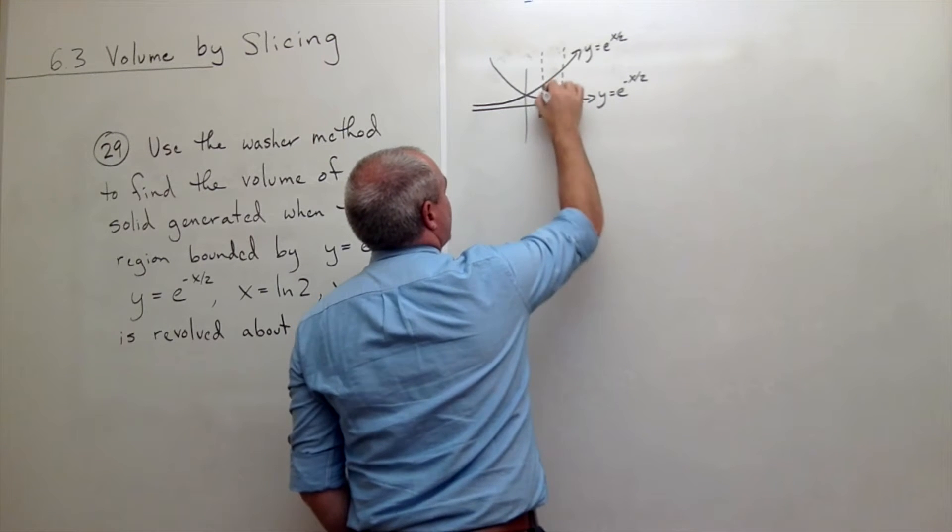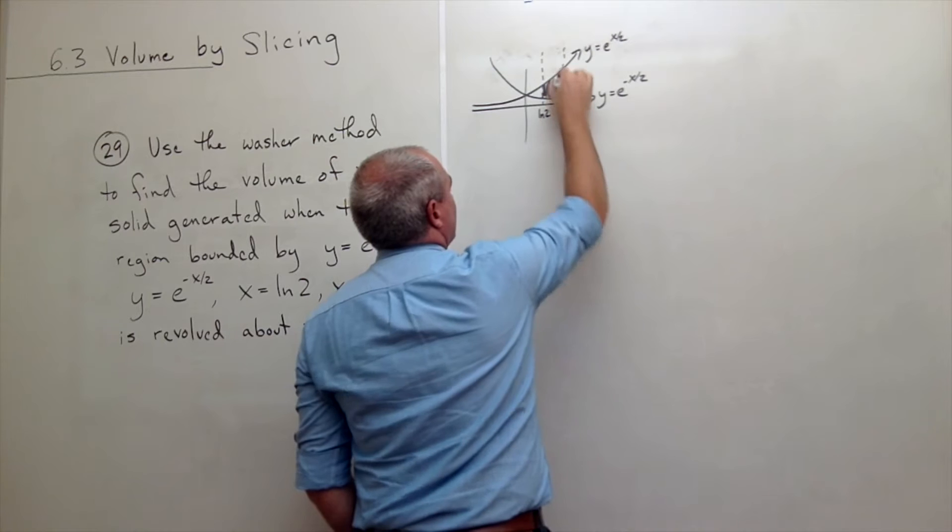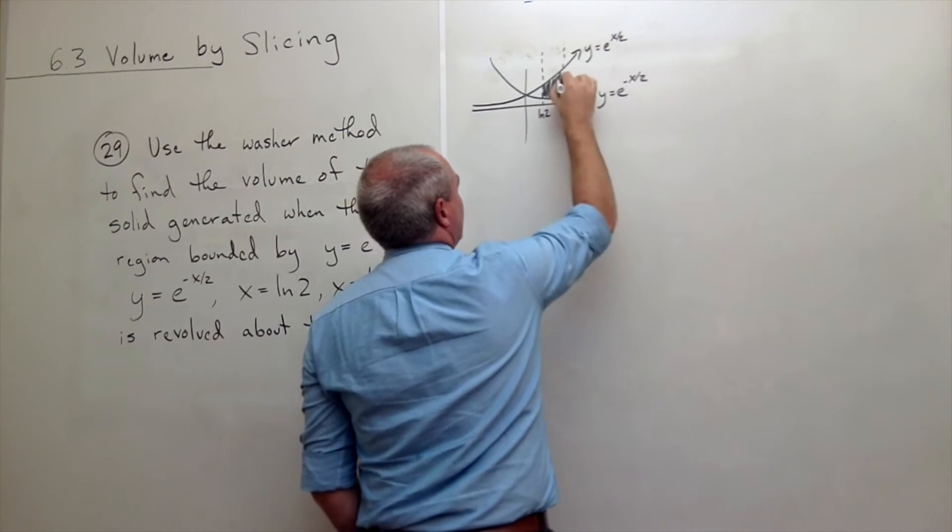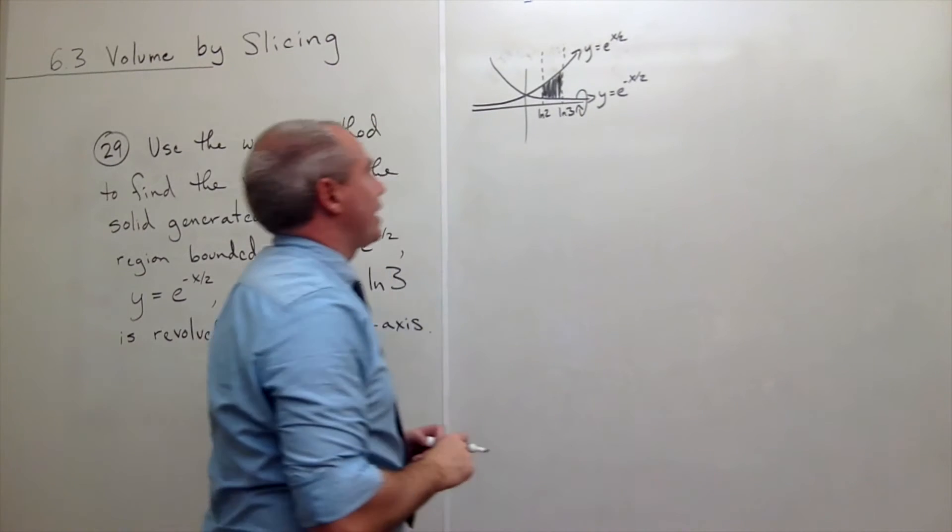And so these are the four sides of my object. So I'll just shade in what I'm revolving. And then I want to take that thing and spin it around the x axis.